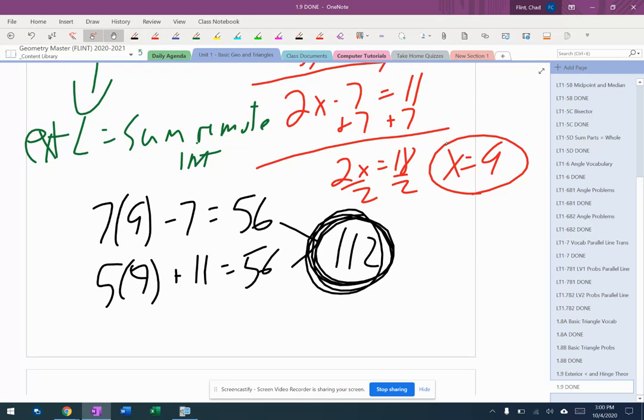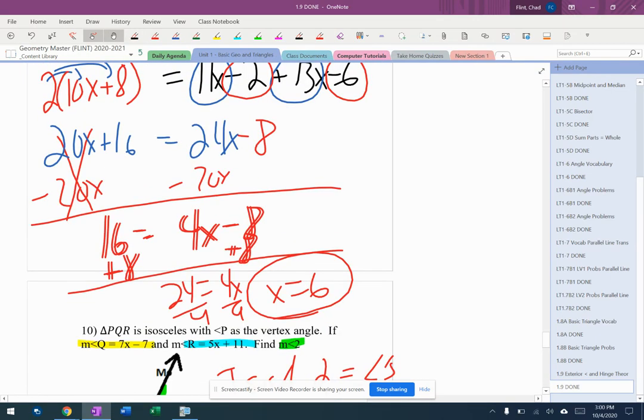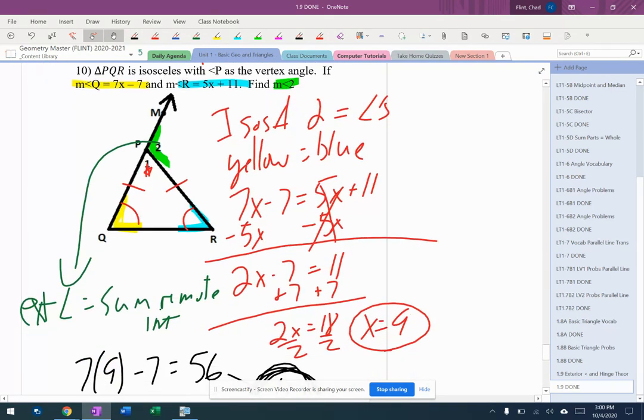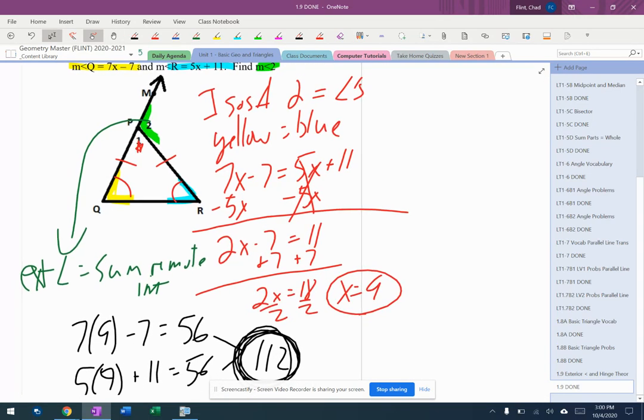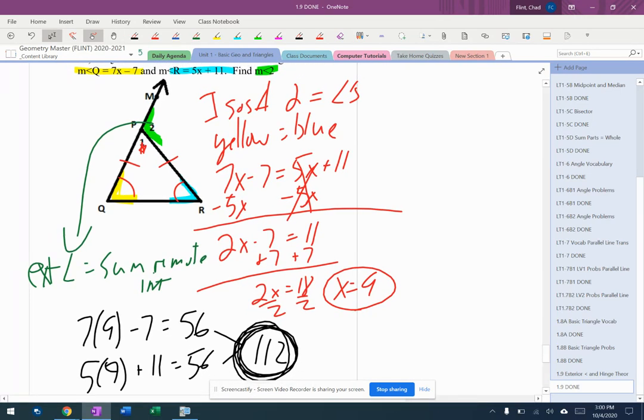And that means the final answer is going to be 112 because the exterior equals the sum of the remote interior. The yellow and the blue. So I took the yellow and blue and I added them together.